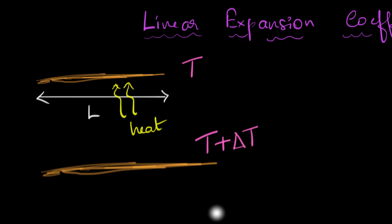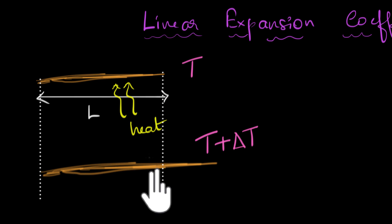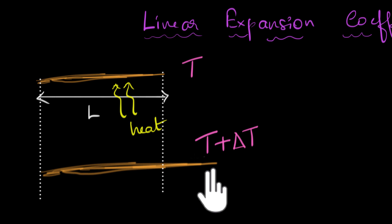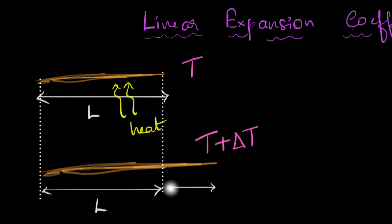Now we'll compare the length of this wire to the previous length. This is how long the wire was initially, so this would be L. And due to the expansion, this is the extra length — this region is that extra length delta L.